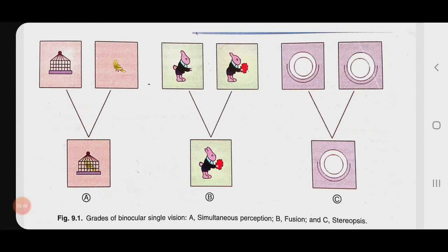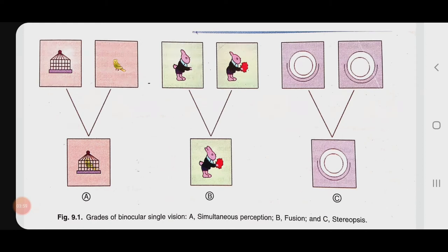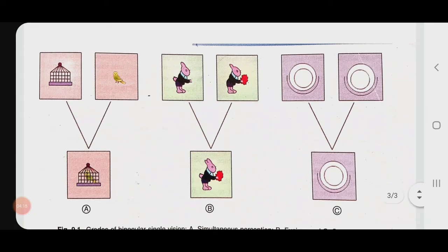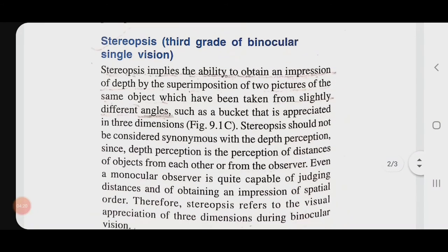So together, when we see through both eyes, these two images fuse together to give a single mental impression — a composite picture is formed. Now you can see the same rabbit standing with a bunch of flowers in his hand, with a tail, and also having two ears. The right eye image is missing the left part and the left eye image is missing the right part. This incomplete-detail stimulus gives rise to a complete composite picture with binocular single vision. Fusion is the second grade of binocular single vision.